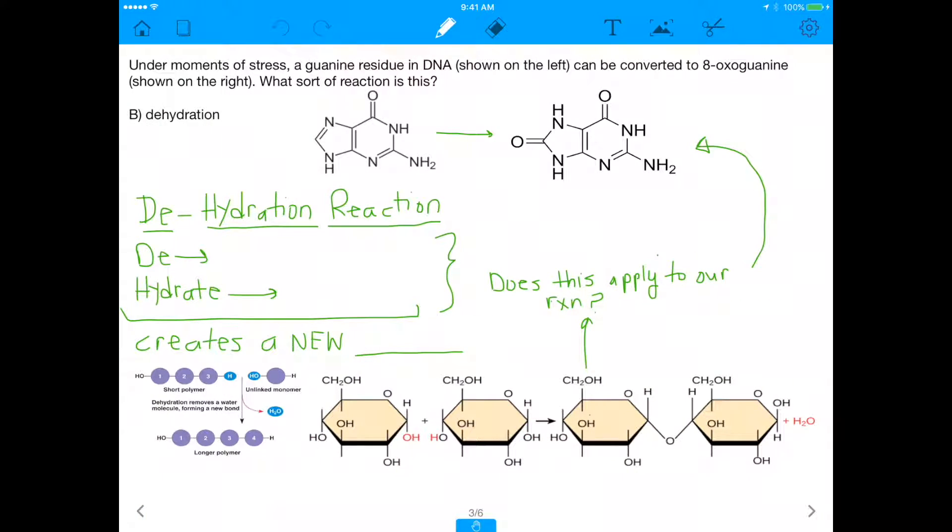Next up on our list is a dehydration reaction. Dehydration means D means remove, like desegregate, remove segregation. So dehydrate means remove water. And in the process of removing water, you create a new bond. If you look at the lower left corner, you'll see that in dehydration, you'll take a water out, and in the process, you combine a polymer of three with one to make a polymer of four. You're taking water out to make a bond.